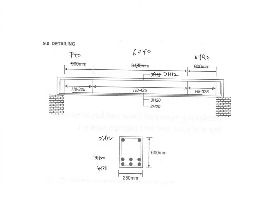For detailing: H8 links at 325 mm near the supports and H8 links at 425 mm in the middle zone. Compression reinforcement is 2H12 at the top; tension reinforcement is 6H20 at the bottom. There is a minor typing error in the example slide from the original notes. That completes Example 4.5 — please revise and practice this example for better understanding.